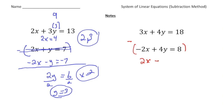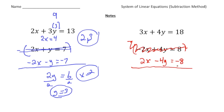When I subtract, subtracting negative 2x gives a positive 2x, subtracting 4y gives a negative 4y, and subtracting 8 gives a negative 8. Now that I've changed that to a negative 4y, I can use the addition method. 3x and 2x gives 5x, 4y and negative 4y cancel out, and 18 and negative 8 has a sum of 10. So x equals 2.